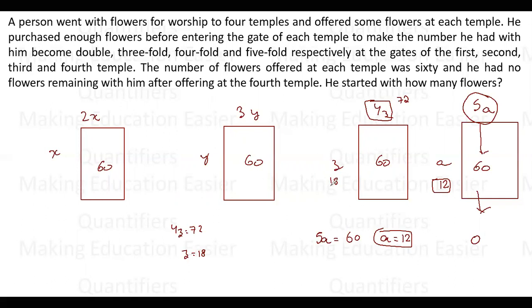Now from where this 18 is left? This 18 is left after he has devoted 60 flowers in the second temple. Now since he is devoting 60 flowers here and 18 are left, which means this number must be equal to 78, right? So 3y is 78, this must be 26.